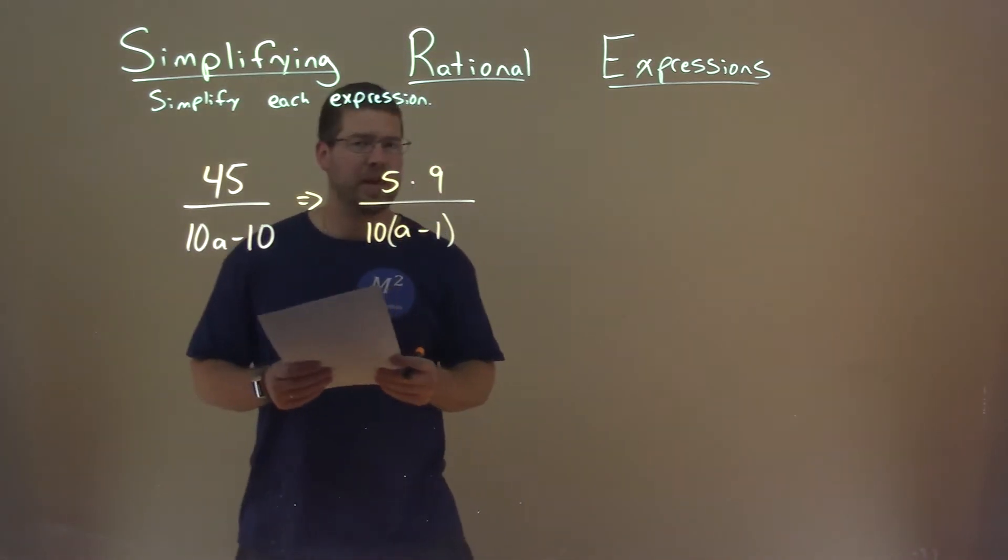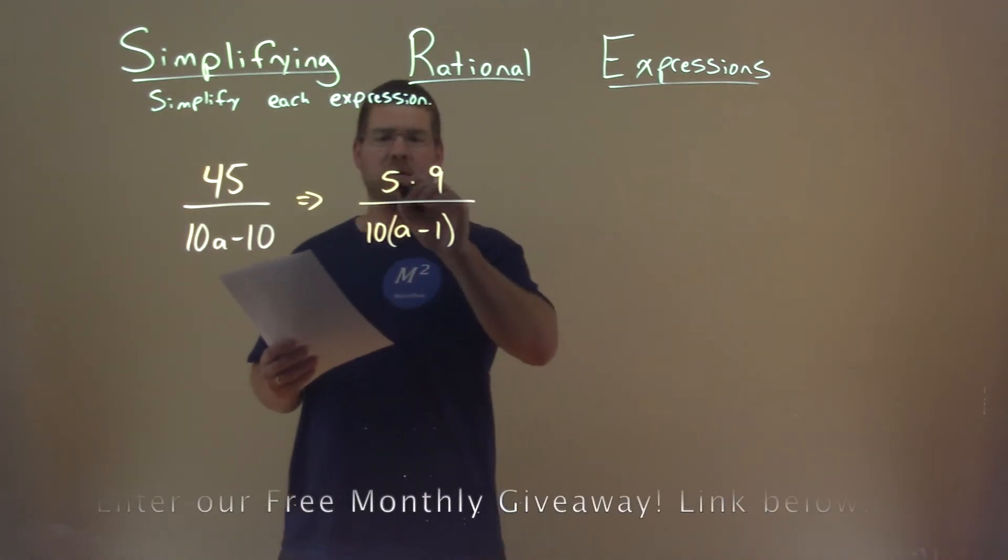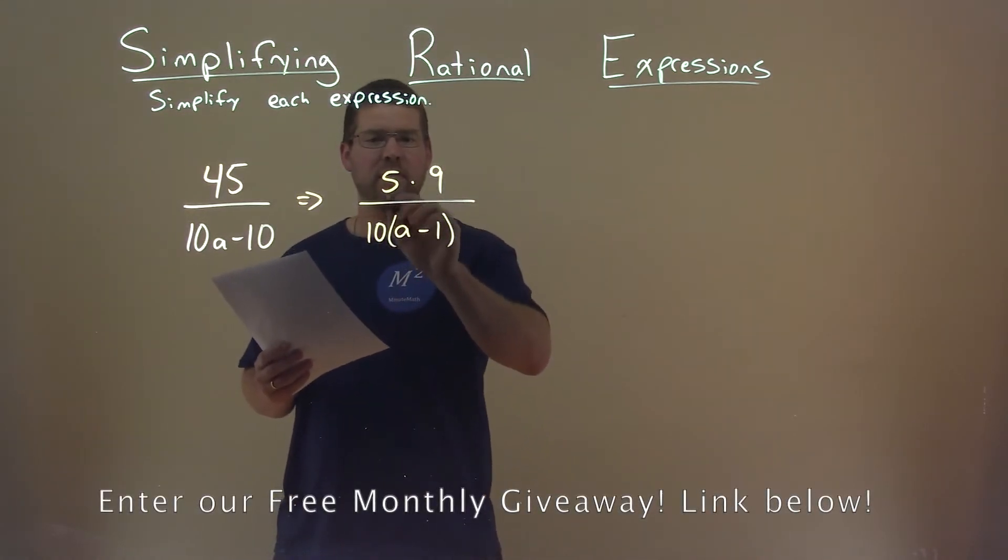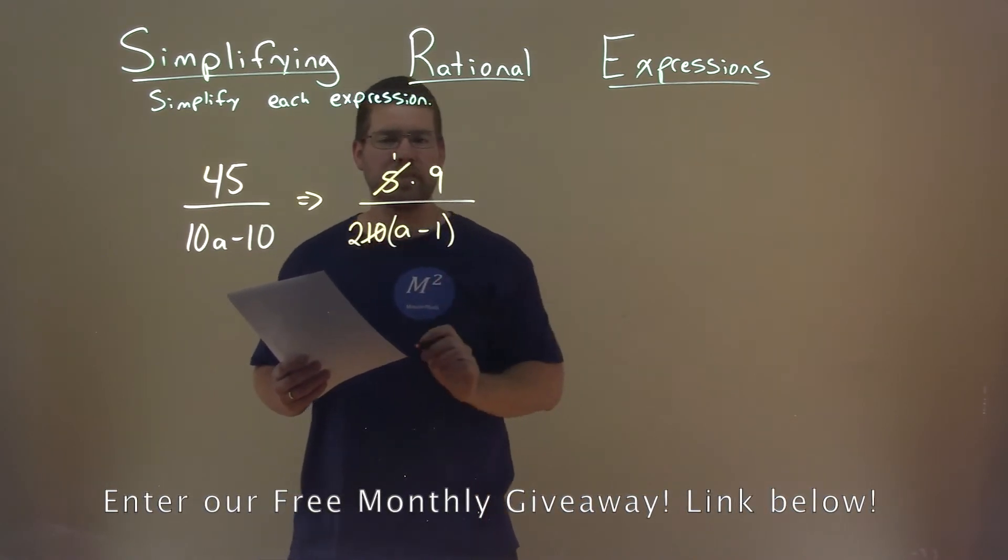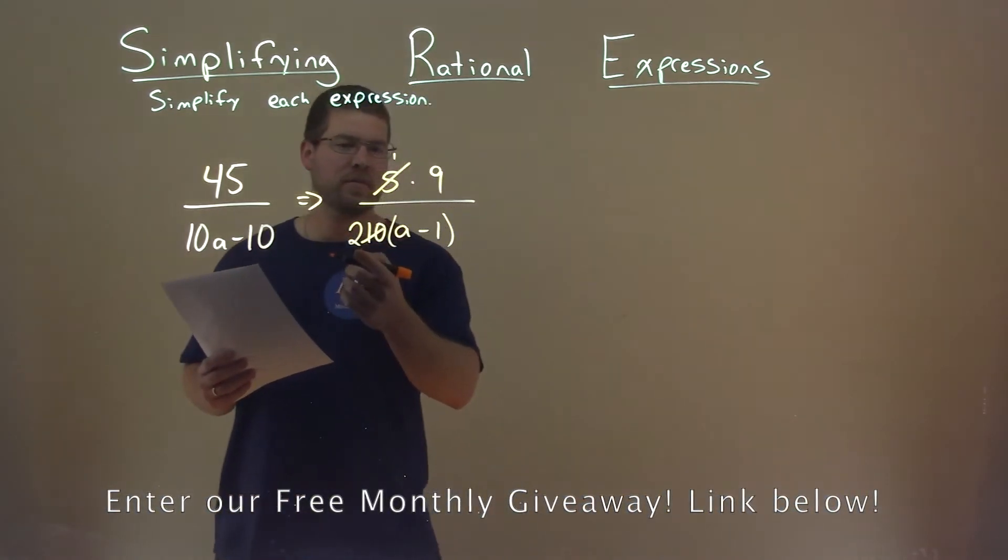And hopefully you can see some simplification that can happen here. 5 and 10, well, 5 goes into 10, so that's just a 1 now, 2 times, right? So we can cancel each other out, and we just have a 2 down here.